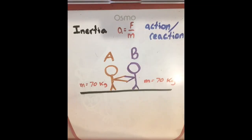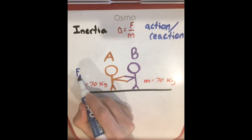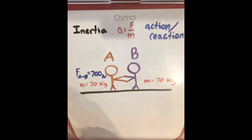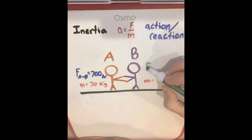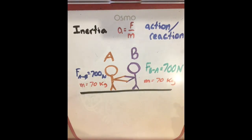Let's look at a problem of two people on a frictionless surface pushing off each other — think of it like two people on rollerblades or ice skates, but with no friction at all. Let's say both person A and person B have equal masses of 70 kilograms. If person A pushes on person B with a force of 700 Newtons, Newton's Third Law says that person B will push back on person A with the same strength force but in the opposite direction. So the forces are equal in strength.